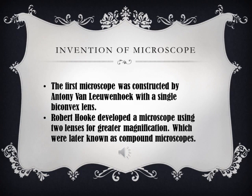The other person who constructed a microscope was Robert Hooke, and he used two lenses. Two lenses means the magnification will be much greater. These microscopes constructed by Robert Hooke were later known as the compound microscope. In Hooke's microscope, the object to be seen was placed on the stage below, and the light from an oil flame was thrown on it by means of a concave mirror.